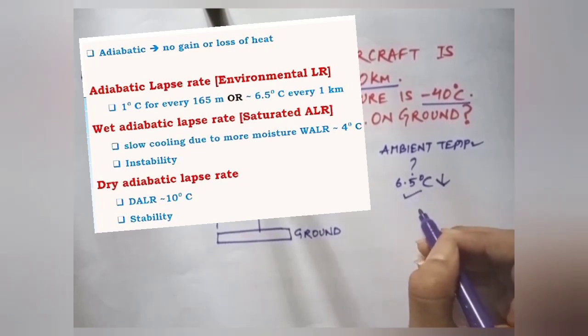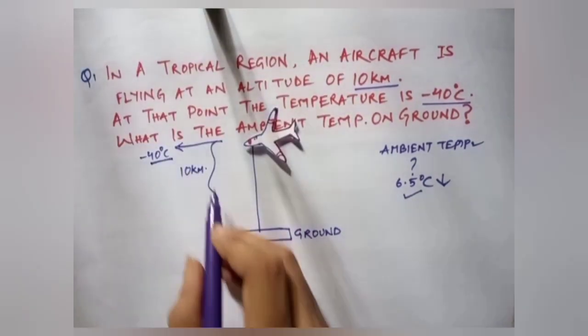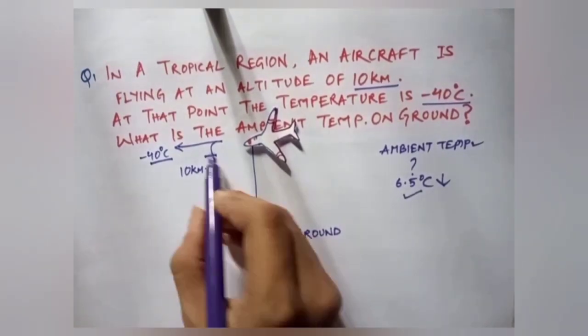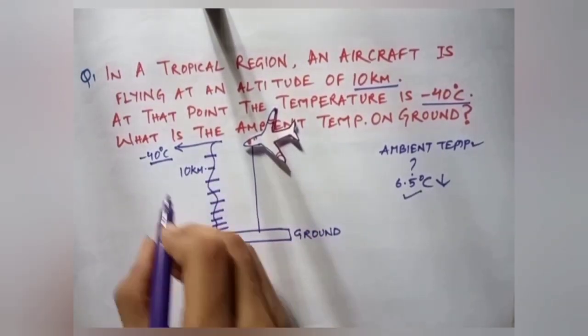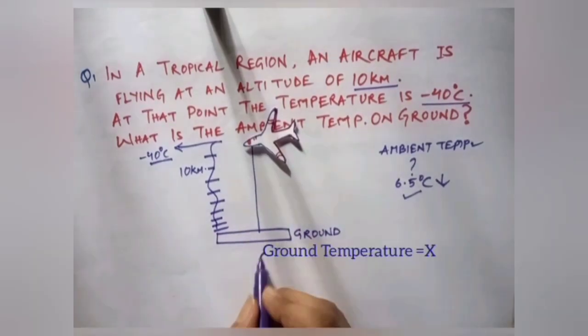So that means for every one kilometer 6.5 degree celsius decreases when we go upward. But here we will divide this 10 kilometer into 10 zones. As we know the environmental lapse rate is given per kilometer. So let us assume the ground temperature be x.